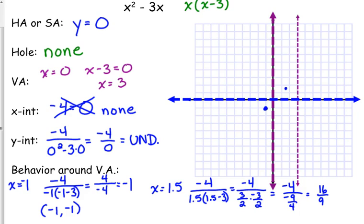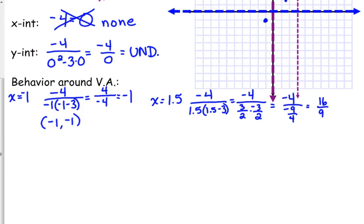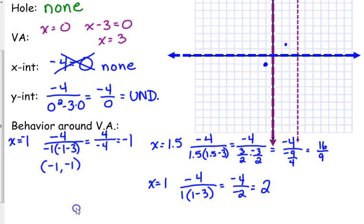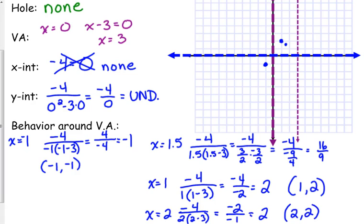So if we pick 1, 1 and 2, they're not so bad. I promise. 1 and 2 is not so bad. We plug in 1, we get negative 4 over 1 times 1 minus 3. That's negative 4 over negative 2. That's 2. Life's not easy. Face some adversity. Not a big deal. Let's plug in 2. Negative 4 over 2 times 2 minus 3. That's negative 2 over negative 1, which is 2. Well, there's some symmetry.